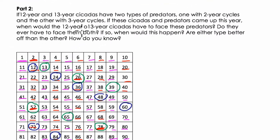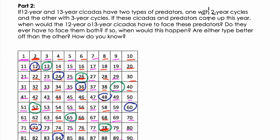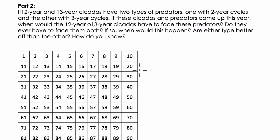Now in part two, we have two types of predators — one with a 2-year cycle and one with a 3-year cycle. They want to know: if the cicadas and predators all came up this year, when would the 12 and 13-year cicadas have to face these predators? Do they ever have to face both at once? If so, when? Are either type better off? To analyze this, I'm going to add one number to my grid: year zero. This is the year they all emerge — the starting point.